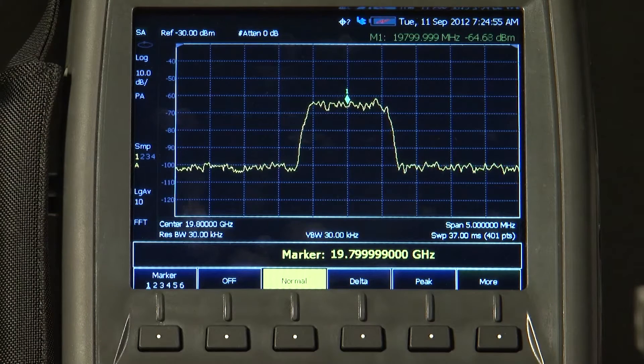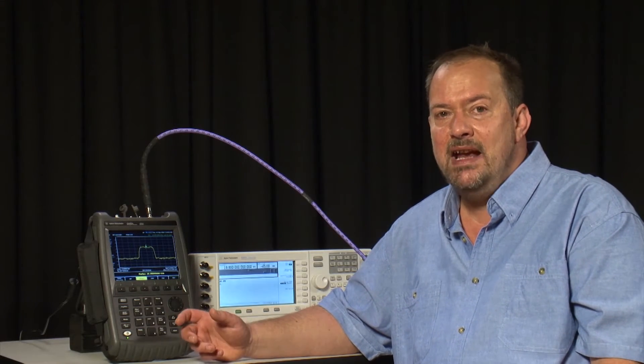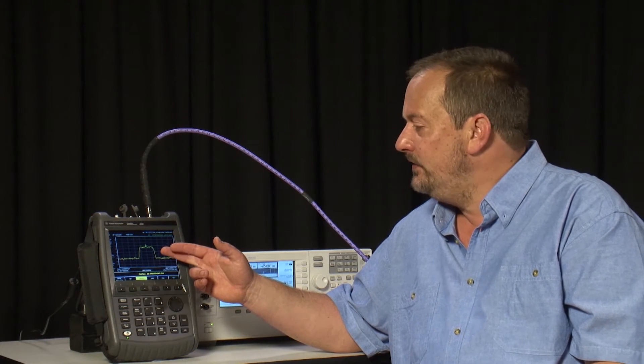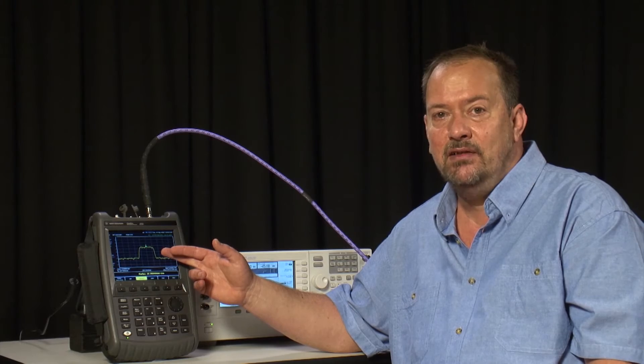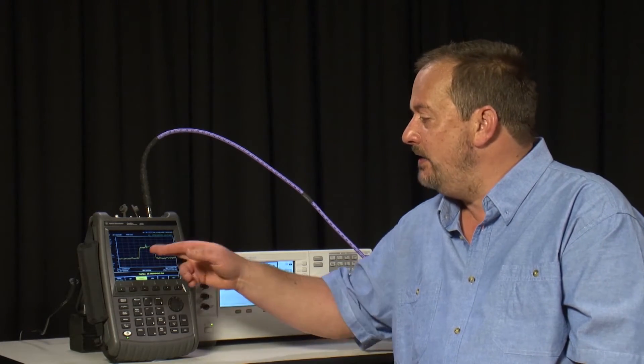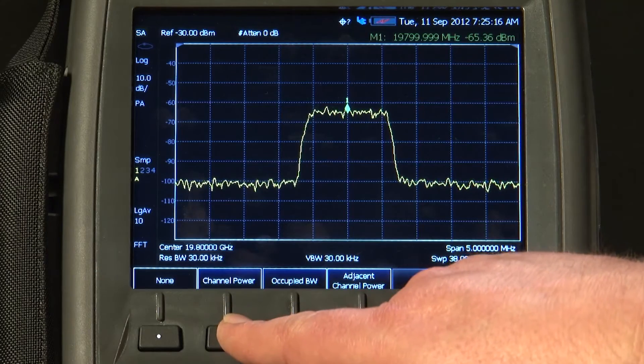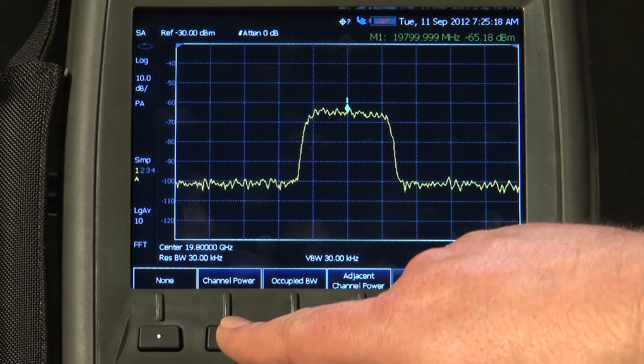But with the FieldFox's built-in channel power measurements, we could automatically make a measurement integrating under the curve of this broad spread spectrum signal, and it will tell us the total RF power within that band. So I will press the Measure button, Channel Measurements, and I will press Channel Power.